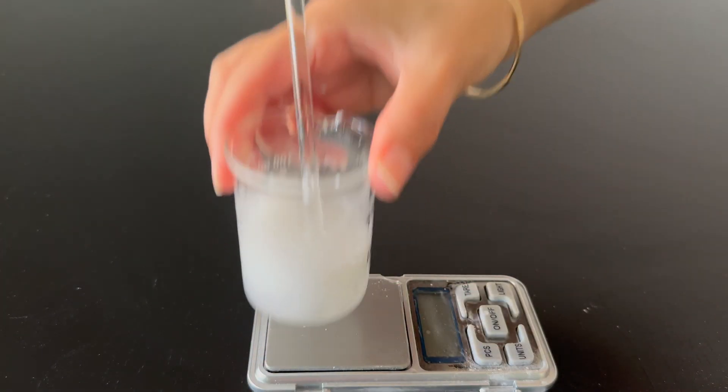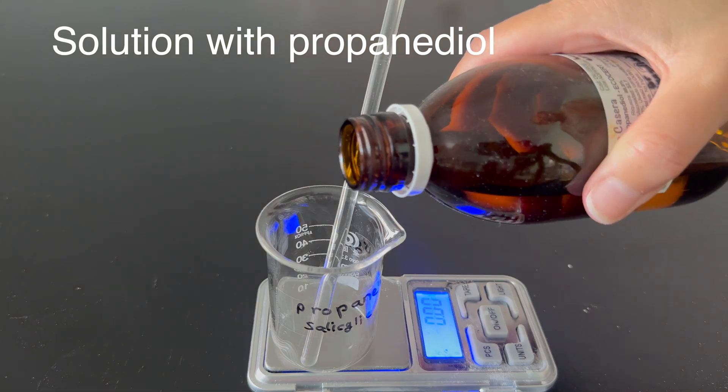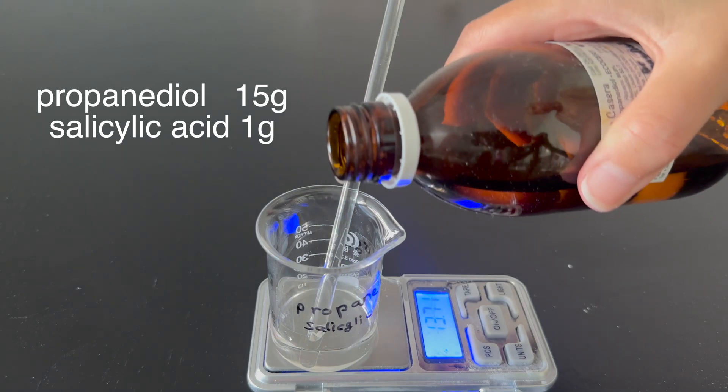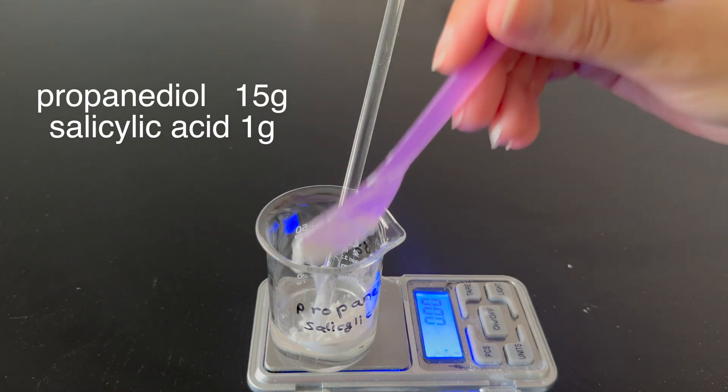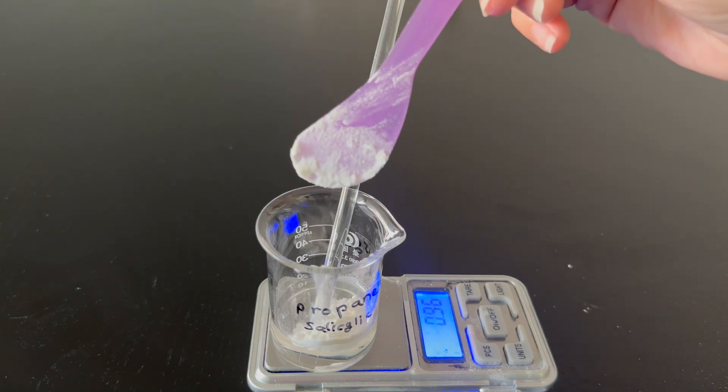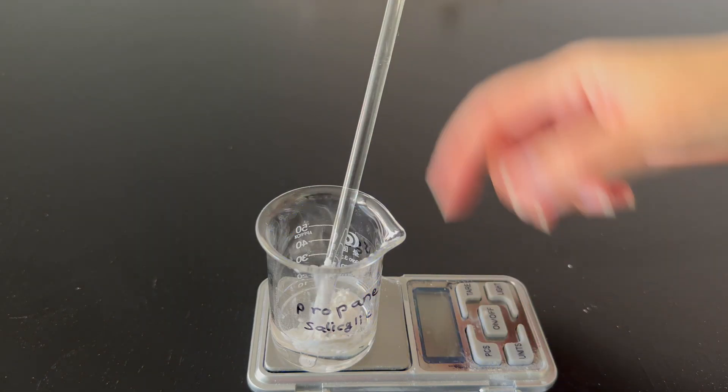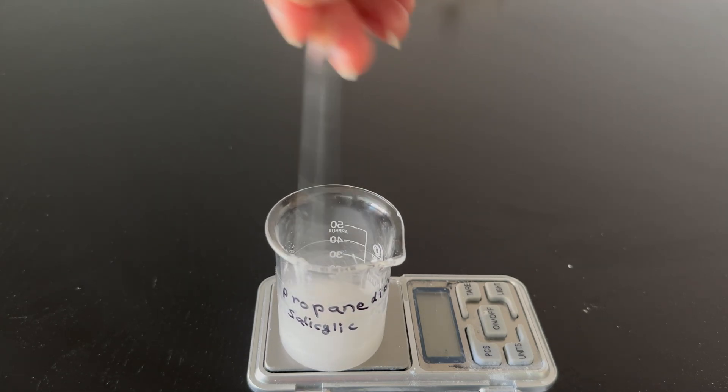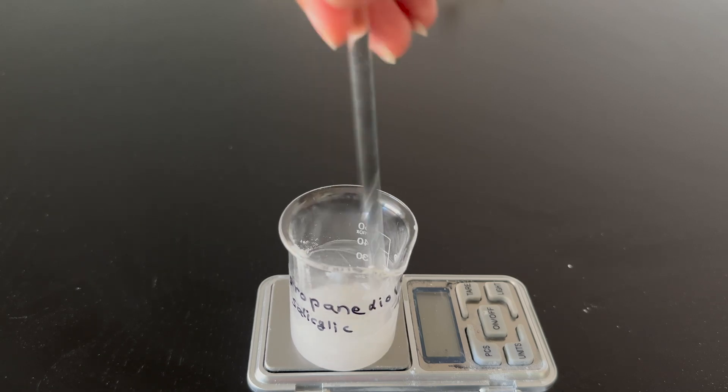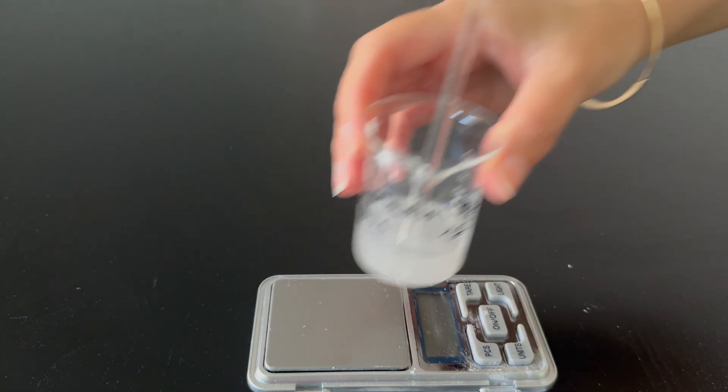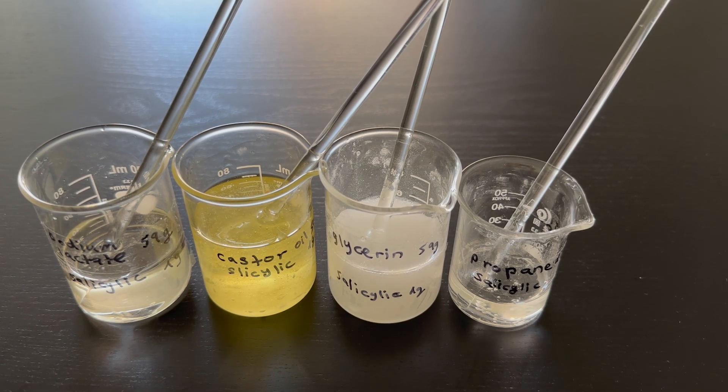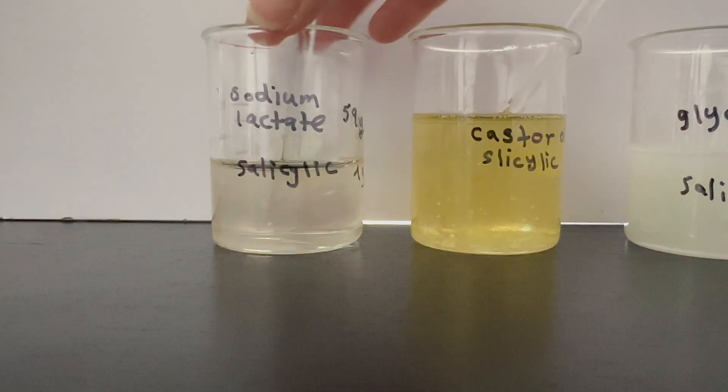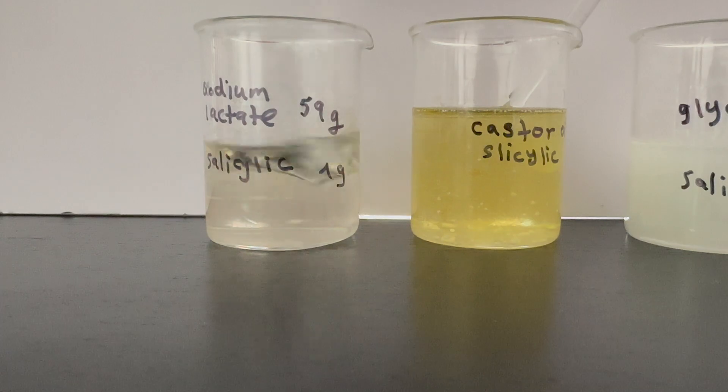The last solution I'm showing here is using propandiol with salicylic acid. Propandiol is used as an alternative to propylene glycol in many cosmetic products. Propandiol is the best solvent I found for dissolving salicylic acid. You only need 15 or 16 grams of propandiol to dissolve 1 gram of salicylic acid. According to many suppliers, you can use up to 25% of propandiol in a formula. If you use the whole solution in a formula, which is 16 grams, you can achieve 1% of salicylic acid in the formula. You can make a 32 gram solution from 30 grams of propandiol and 2 grams of salicylic acid and then use 20 grams of this solution to achieve a total of 1.25% salicylic acid in a product.